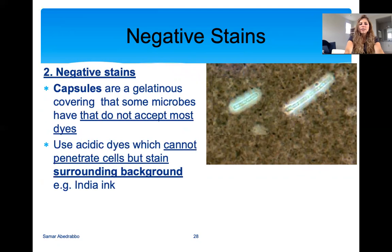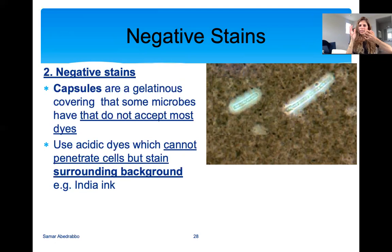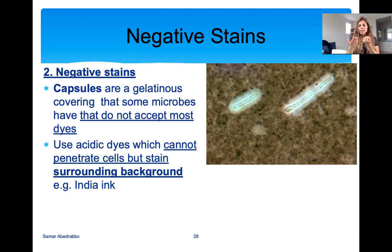Negative stains are stains that stain the background. Some bacteria have something called a capsule — a gelatinous material that covers the bacteria. Bacteria with a capsule are very hard to stain with regular stains because stains won't stick due to this gelatinous capsule. So there is a negative stain type that uses acidic dyes which do not stain the cells but stain the background, so you can actually see your cells. Negative stains are stains that color the background so you can see, for example, the capsule on bacteria.